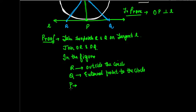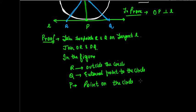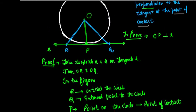But point P is the point of contact, which means the tangent touches that point on the circle, so P is the point on the circle — the point of contact.